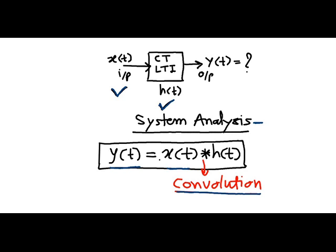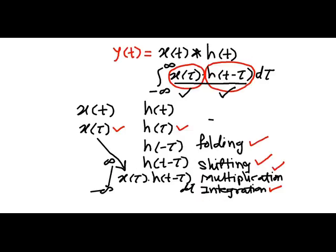The convolution operation is a mathematical operation that comprises of four different steps: folding, shifting, multiplication and integration, as shown in the formula of convolution integral. The formula is stated as integration from minus to plus infinity x of tau, h of t minus tau, d tau.